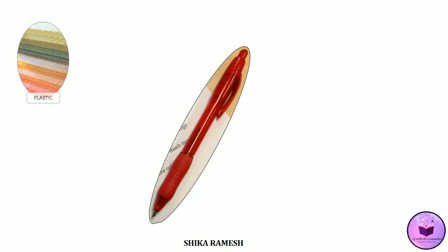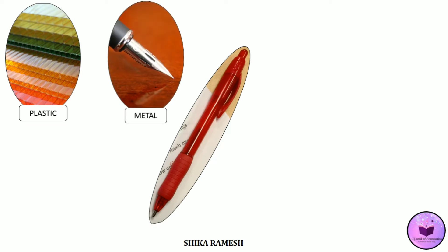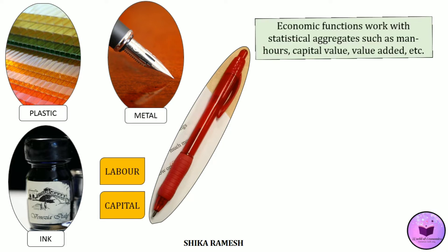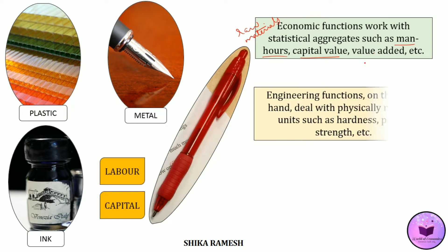Now let's take an example of a pen. In order to produce a pen we need raw materials such as plastic for the outer casing, metal for the nib, and ink. To aggregate all these raw materials and convert them into a pen we also need laborers and capital. If we were talking about the economic function of producing a pen, we would be dealing with statistical aggregates such as man hours used, the amount of raw materials used, and the capital value added for the production of the pen. But when it comes to engineering functions, we deal with physically relevant units such as the hardness, purity, strength or quality of the inputs being used.